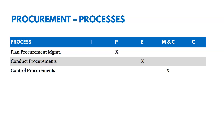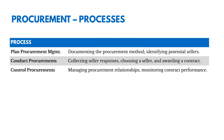There are three processes in this chapter: Plan Procurement Management in planning, Conduct Procurements in Executing, and Control Procurements in Monitoring and Controlling. In Plan Procurement Management, we're documenting the procurement method and identifying potential sellers — determining what we're going to do ourselves and what we'll get help from others to do. Conducting Procurements is about collecting seller responses, choosing a seller, and awarding a contract. Then Control Procurements is about managing procurement relationships and monitoring contract performance to make sure the seller is fulfilling their obligations.